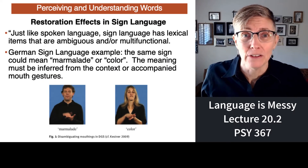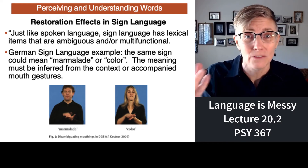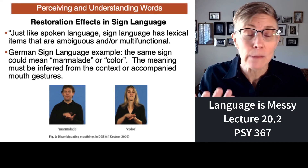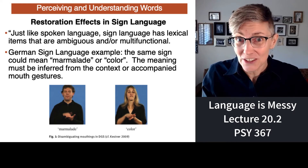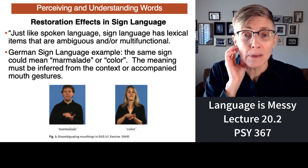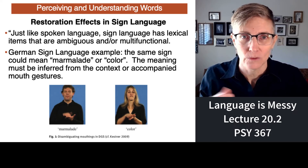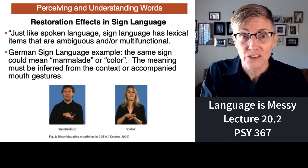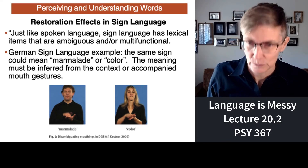There's also a restoration effect in sign language. Signs are just as ambiguous as auditory phonemes — people sign in different ways, hearing people sign differently than deaf people, and people from different parts of the country have different signing accents. In German Sign Language, the same sign is used for both 'color' and 'marmalade.' How do people tell them apart? They look at the signs on either side — the context and meaning. We're filling stuff in again.